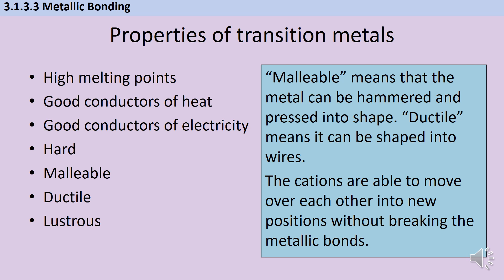This also explains why alloys are so much harder than pure metals. In an alloy, you've got atoms that are a different size because they come from a different element. And they're going to distort those regular rows and stop them from sliding over each other.